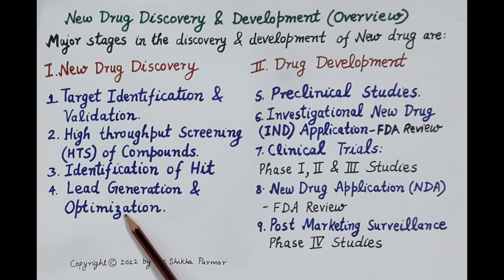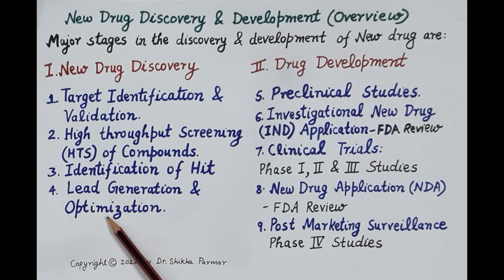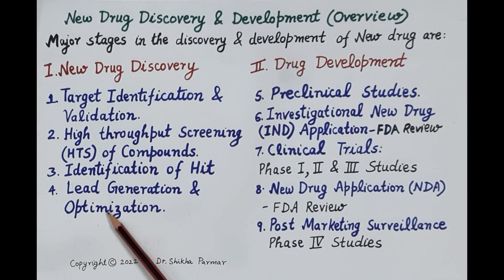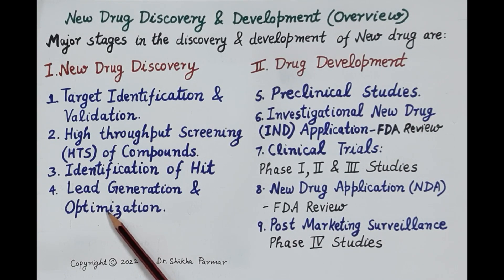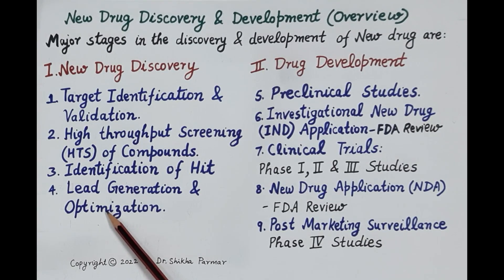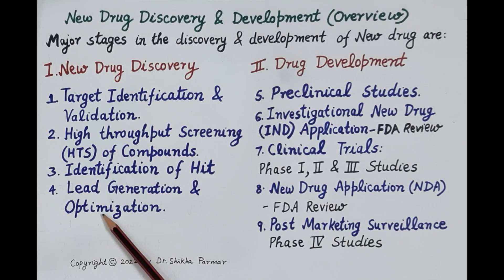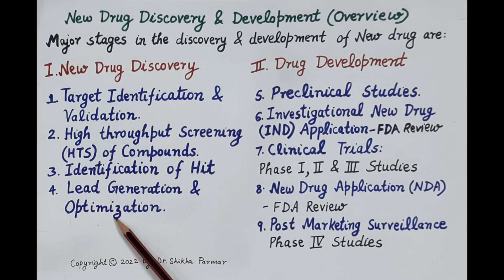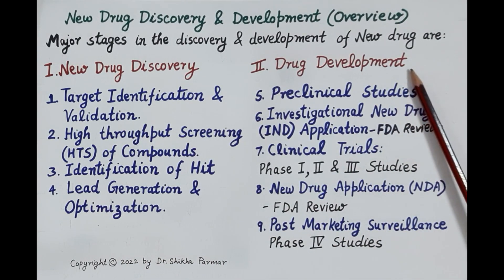After leads are generated, they are optimized. In lead optimization, lead compounds are used as templates and more potential candidates are designed by chemical modification. These compounds produced by chemical modification possess higher affinity, higher selectivity for the target, show a good ADME profile — that is, absorption, distribution, metabolism, and excretion — and good structure-activity relationship. Around 250 compounds are designed from the lead compounds, and these 250 compounds enter the process of drug development.